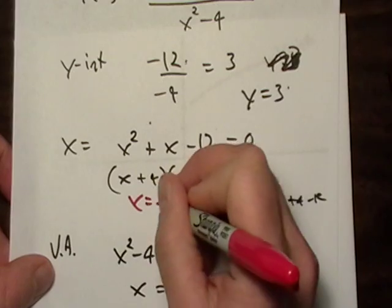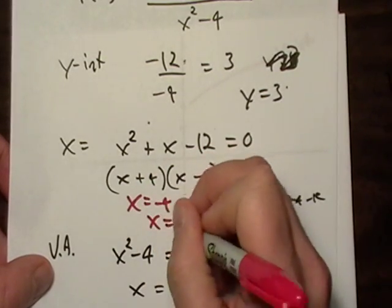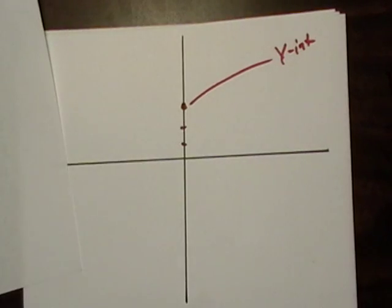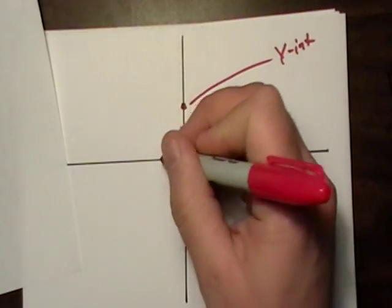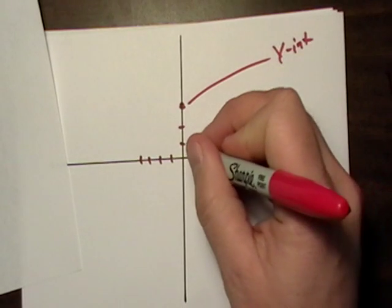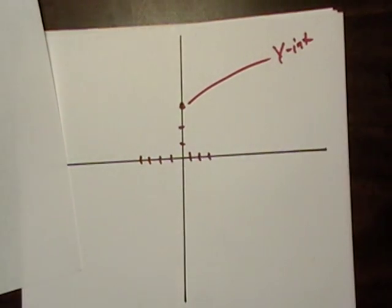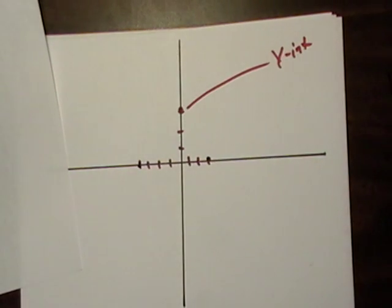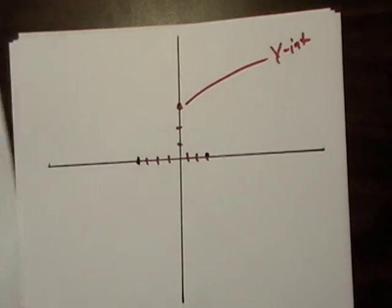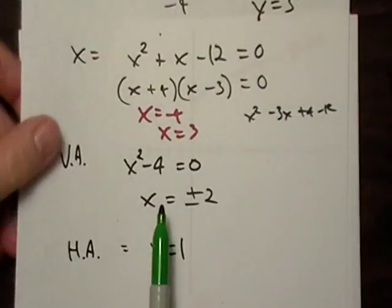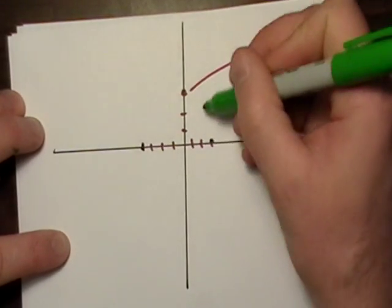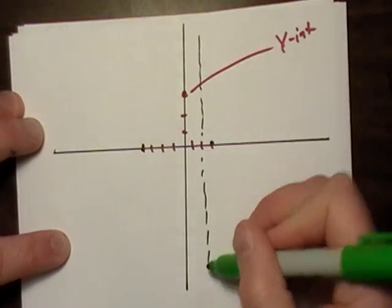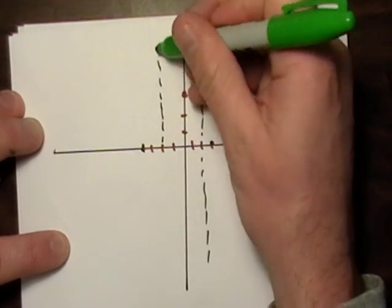That's x equals negative 4 and x equals 3. Let's see. 1, 2, 3, 4. 1, 2, 3. I'm going to use blue for these ones. Where were my asymptotes at? My vertical ones. Vertical asymptotes were at x equals plus or minus 2. Here's 2. Let's just draw in our little framework here.